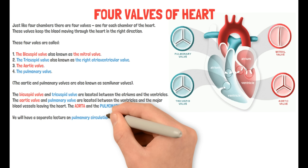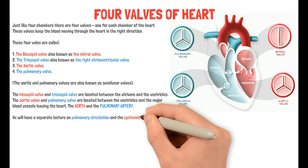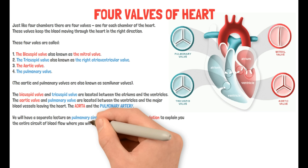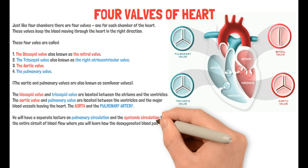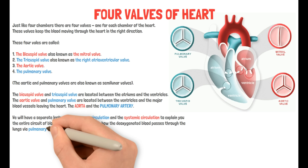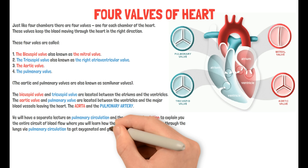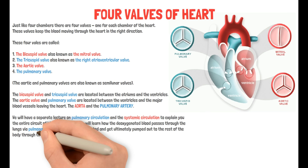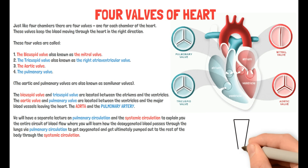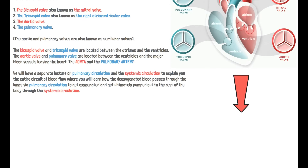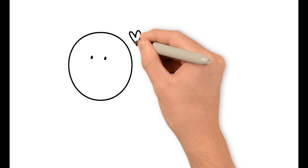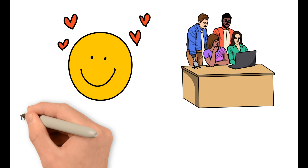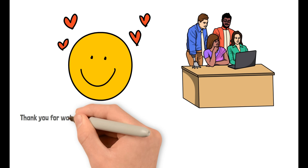We will have a separate lecture on pulmonary circulation and systemic circulation to explain the entire circuit of blood flow, where you will learn how deoxygenated blood passes through the lungs via pulmonary circulation to get oxygenated and ultimately gets pumped out to the rest of the body through the systemic circulation. This concludes our lecture for today. We hope you liked it — share it with your friends, and thank you for watching.